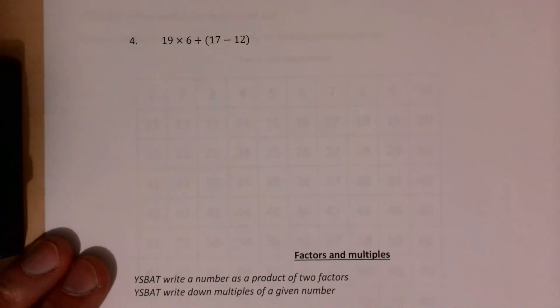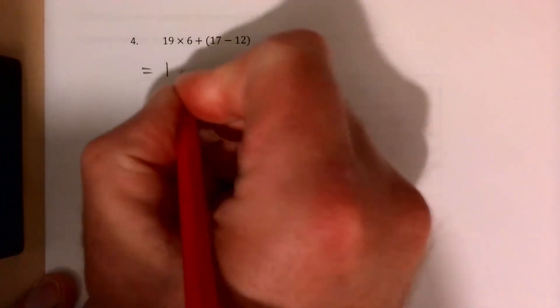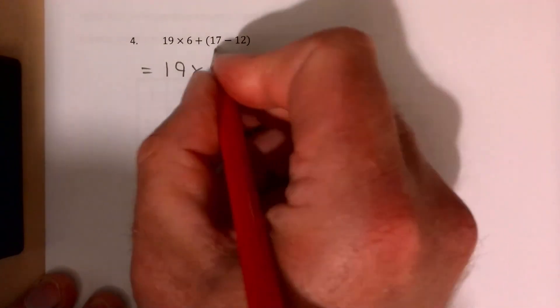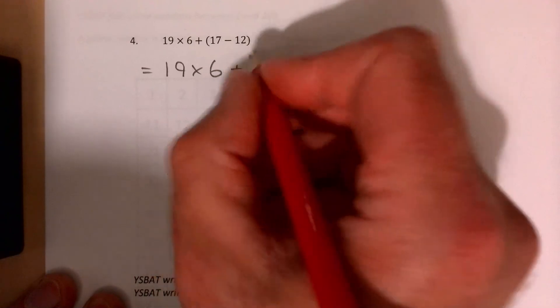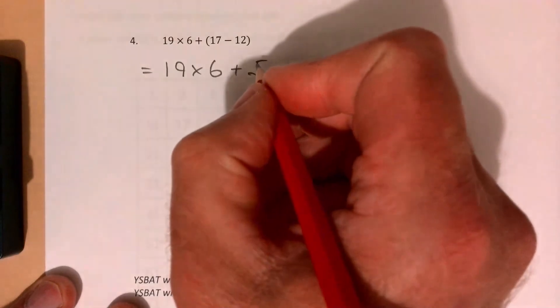Finally, for example 4: 19 times 6 plus 17 take away 12. So brackets come first, so we do the bit in brackets first, and it's going to be 5.